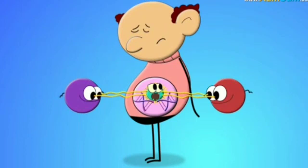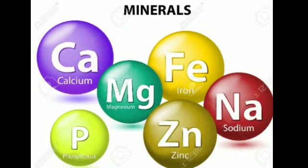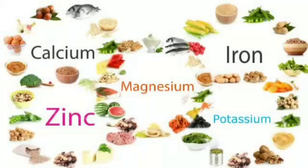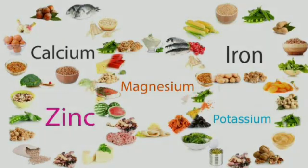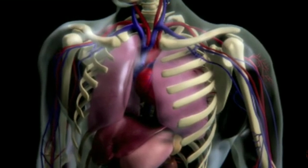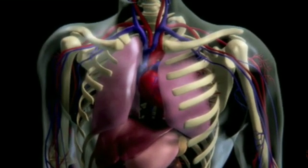Iron, Calcium, Sodium, and Potassium are examples of minerals that are essential for the body. They are needed in very small quantities, but they have an important part to play in all the necessary functions of our body. For example, iron is necessary for carrying oxygen to different parts of the body.